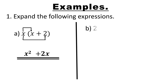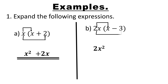Question b: 2x into x minus 3. We take 2x multiplied by x, which gives us 2x squared, then 2x multiplied by negative 3, which gives us negative 6x. That becomes our answer.